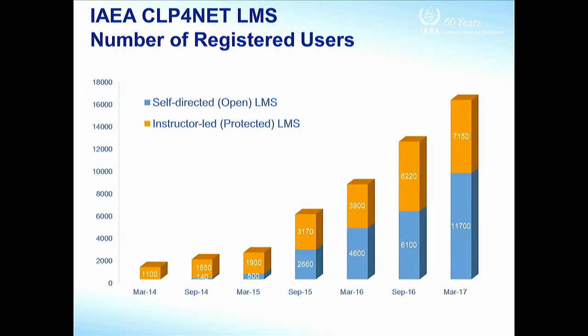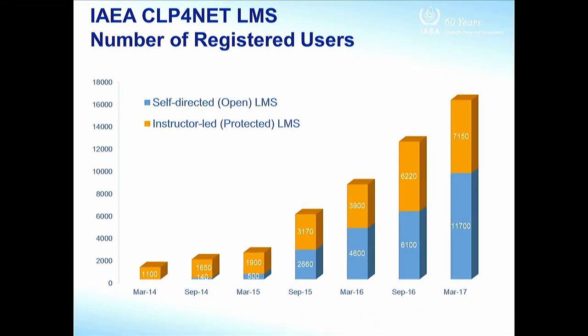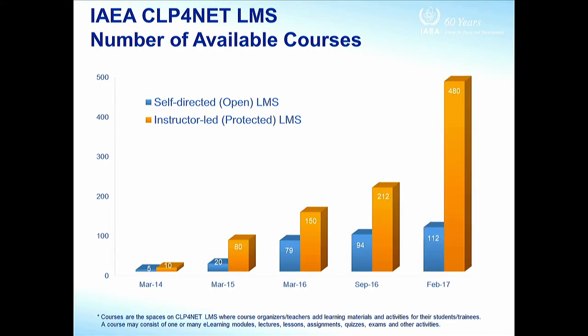When we started in September 2014, the instructor-led management system had around 1,700 users, and the open system had only 140 users. But now we have 11,700 users in the self-directed open learning management system, and around 7,100 to 7,200 users in the instructor-led system. The course base has also increased considerably — when we started, we had only 15 courses in total, but now we have around 600 courses. This represents considerable growth over the last three to four years.